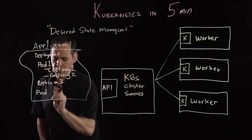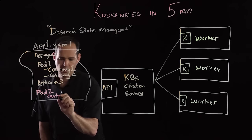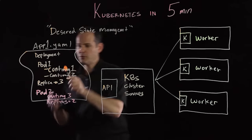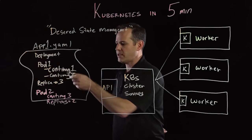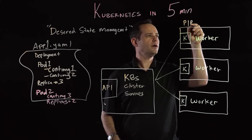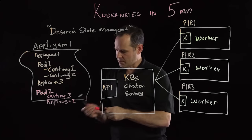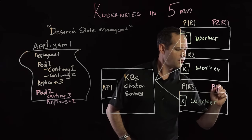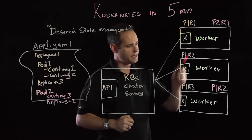I can also list additional pods. So pod number two has container image number three and replicas equal to two. What happens is I will take this deployment file, feed it to the API, and it will be up to the cluster services to figure out how to schedule these pods in the environment and make sure I have the right number of pods running. So for pod one, I'll have pod one replica one, pod one replica two, pod one replica three. I've also got pod two — pod two replica one and pod two replica two. At any point in time, the cluster services are responsible to make sure that configuration is running across all of my container hosts or workers.